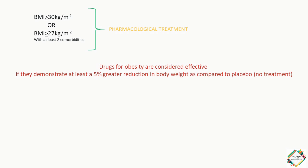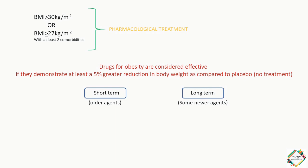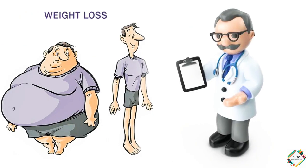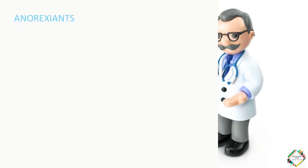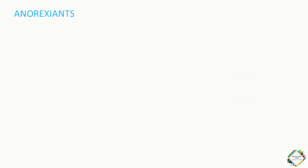The majority of drugs approved to treat obesity have short-term indications for usage, but some of the newer medications have been approved for long-term weight management. The different classes of drugs used for the treatment of obesity include anorexiants, lipase inhibitors, and serotonin agonists. The anorexiants, also known as appetite suppressants, include two drugs: Phentermine and Diethylpropion.